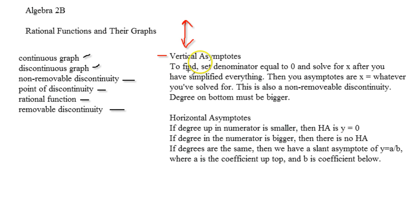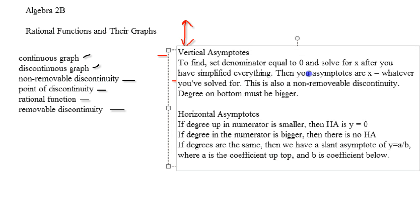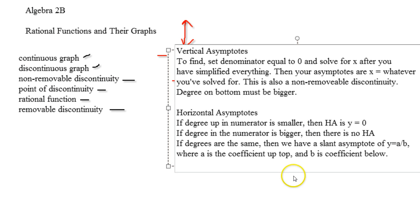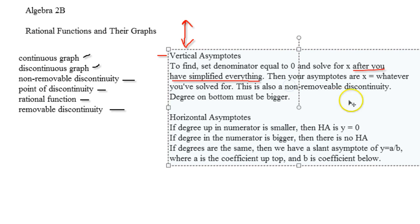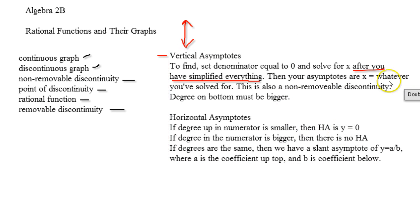Okay, to find the vertical asymptote, set the denominator equal to zero and solve for x after you have simplified everything. In other words, after you have found the holes. Then you're, well, then you, that's so fantastic that I can speak the language that I know. My bad, you guys. Okay, then your asymptotes are x equals whatever you solve for. This is also a non-removable discontinuity. Degree on the bottom must be bigger for this to work.